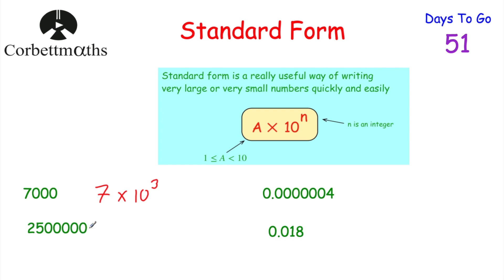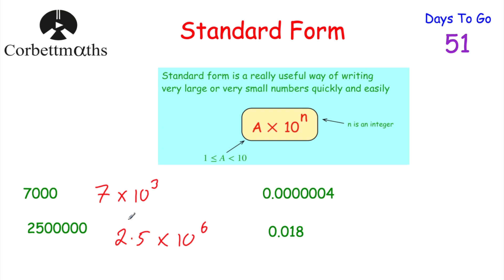Next we've got 2,500,000. We need a number between 1 and 10, so we choose 2.5, then multiply by 10 to a certain power. Starting from 2.5, we need to move the digits 1, 2, 3, 4, 5, 6 columns to the left to reach 2,500,000. So it'll be 2.5 × 10⁶. To recap: we consider 2.5 and count how many columns we need to move the digits to the left — 6 columns — so we multiply by 10⁶.